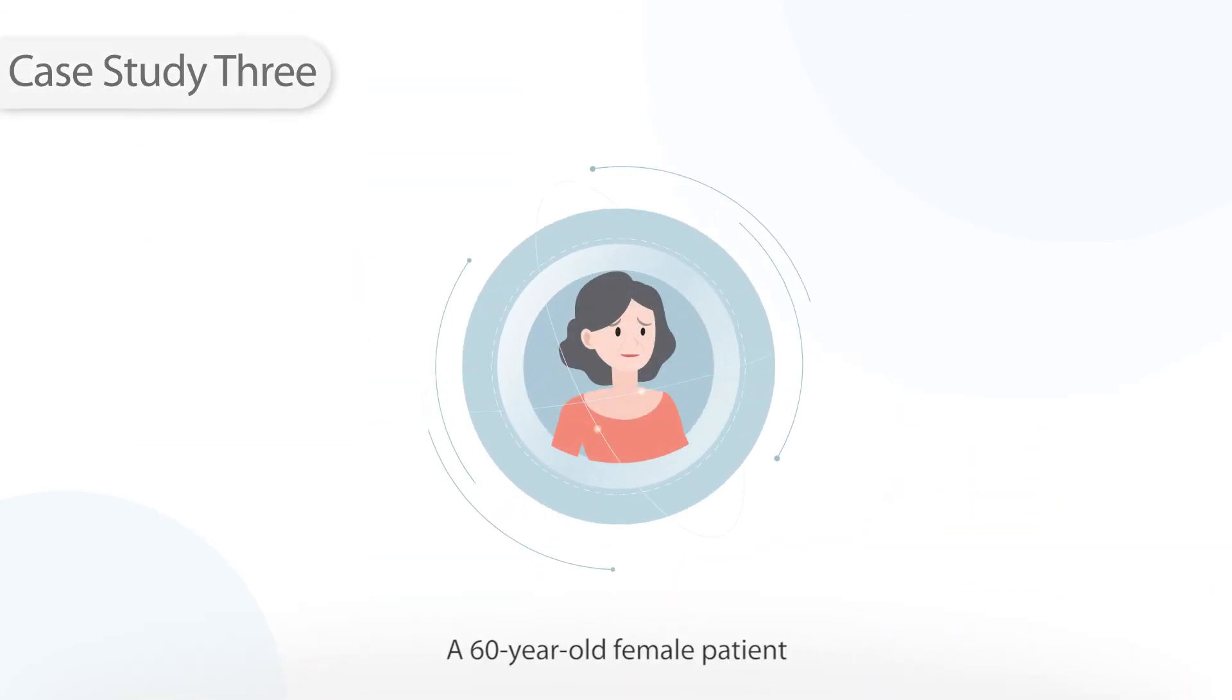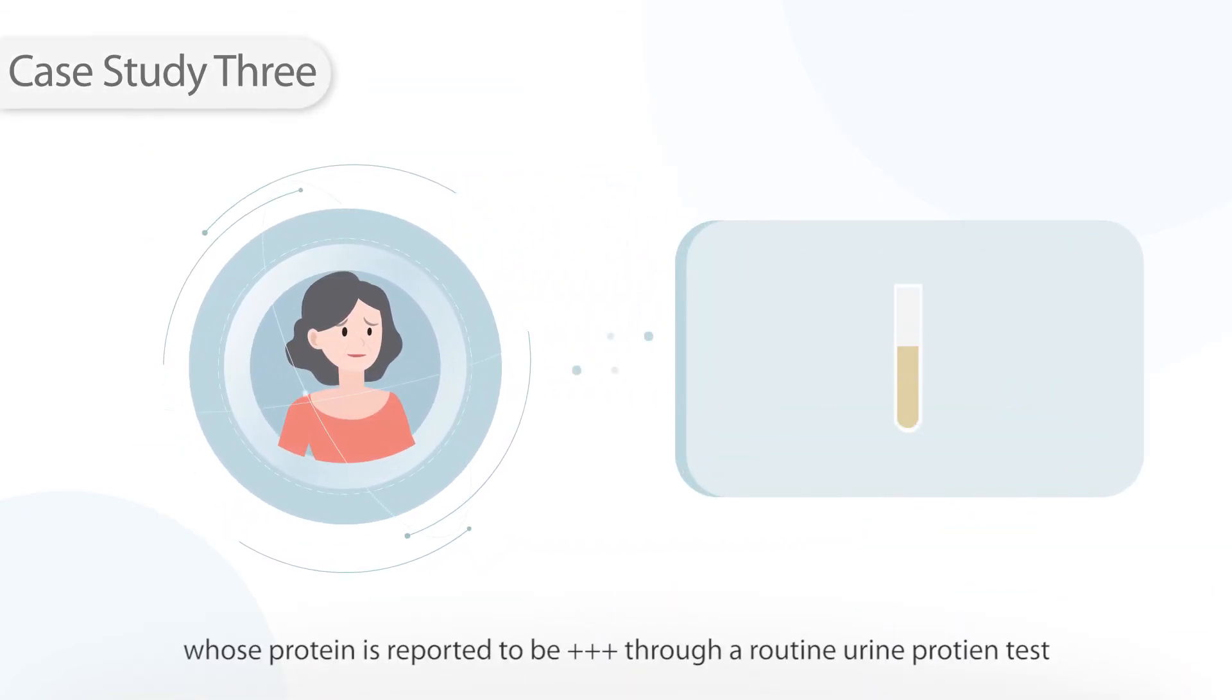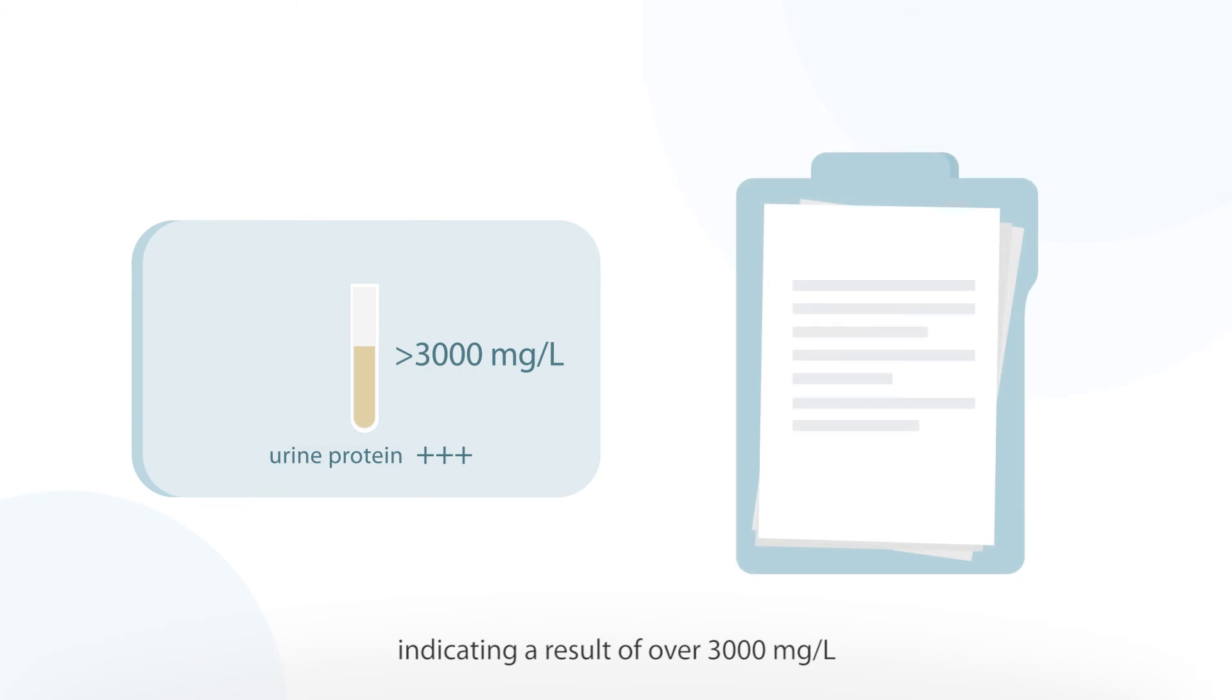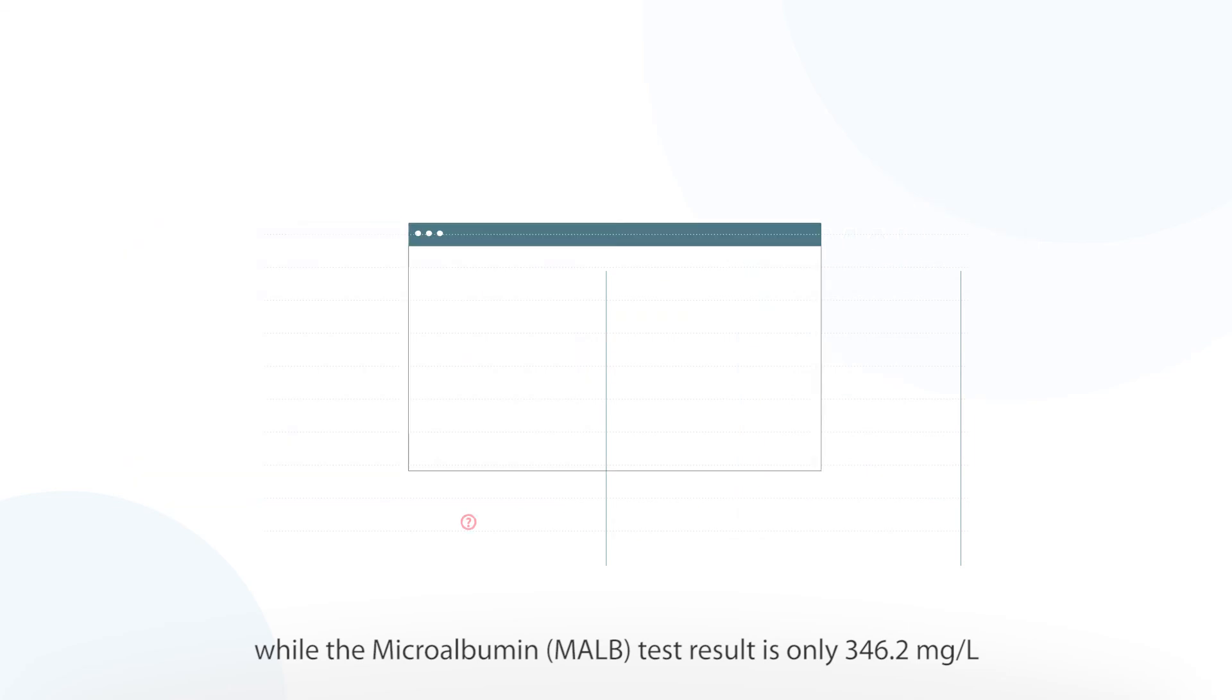Case study 3. A 60 year old female patient whose protein is reported to be triple plus through a routine urine protein test indicating a result of over 3000 mg per liter while the microalbumin test result is only 346.2 mg per liter.